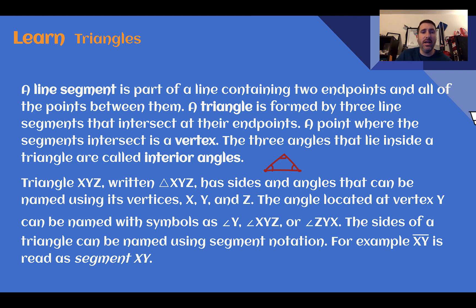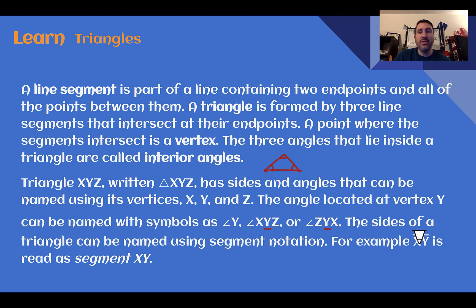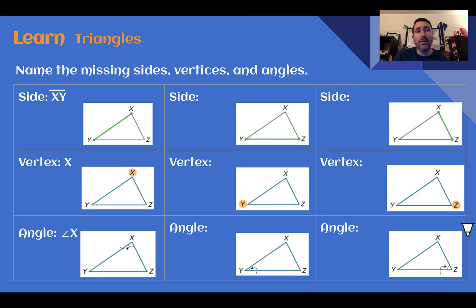Triangle XYZ, written with a little triangle symbol, has sides and angles that can be named — such as angle Y, or we could call it angle XYZ (the angle you're referencing is in the middle), or angle ZYX. The sides of a triangle can be named using segment notation — you'll see this with the letters of the vertices and a line over top. It is read as segment XY, the segment that goes from X to Y.